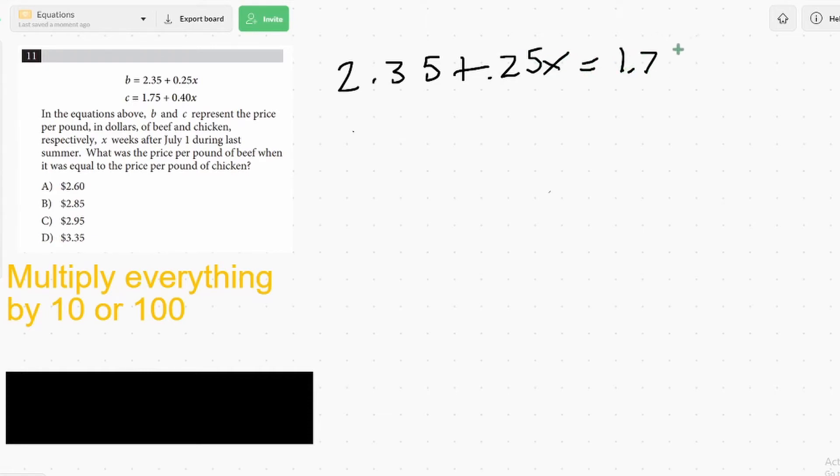So if we set up our equation, we have 2.35 plus 0.25X equals 1.75 plus 0.40X. So here we got our equation with some decimals in it. And we can solve this, but it would probably take us a little bit longer than if we multiplied everything here by 100.